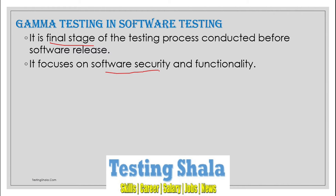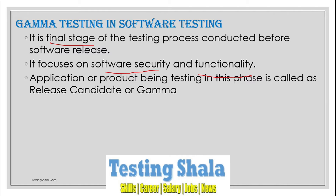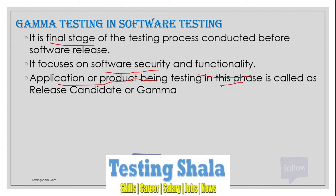Functionality is the main core thing in gamma testing. Whatever the product or application which we are going to test in this phase — the gamma phase — we will also call it a release candidate or a gamma candidate.